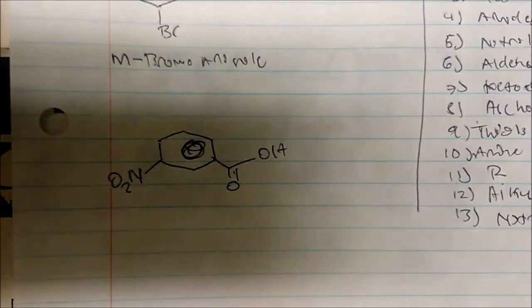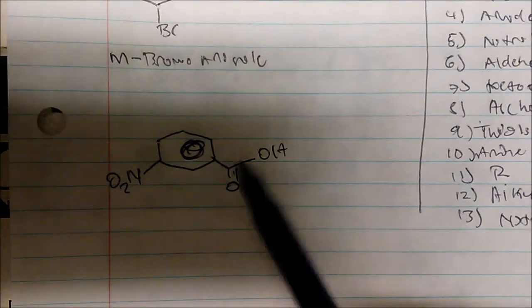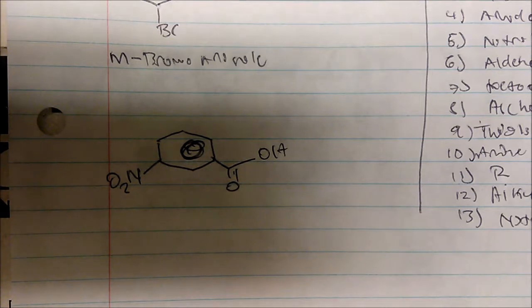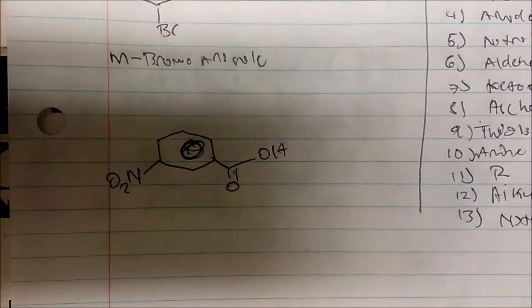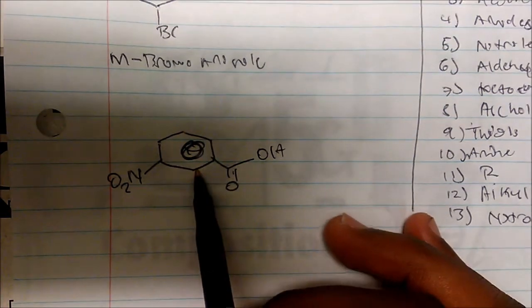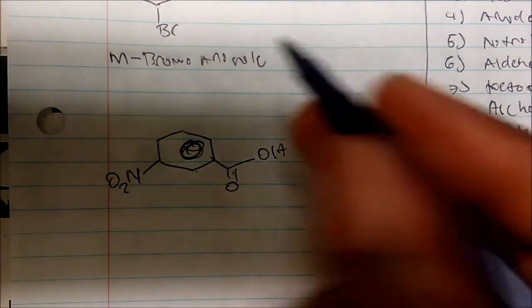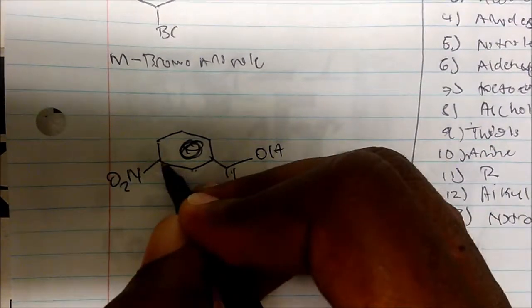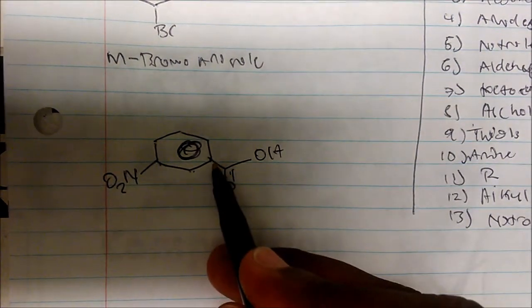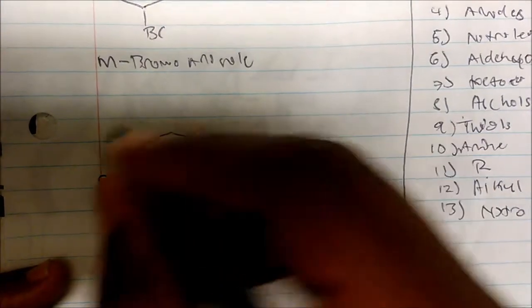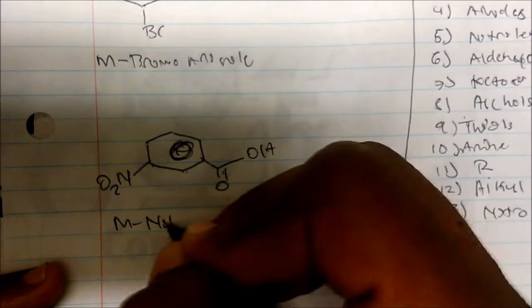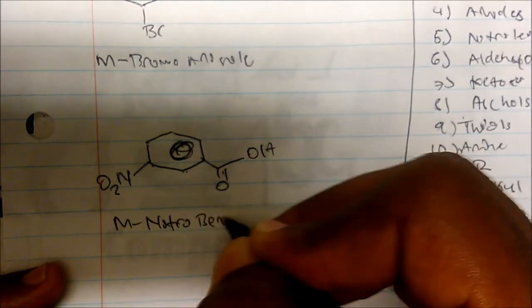What would we name a compound with a nitro group and a carboxylic acid on the ring? Carboxylic acids have the number one priority, so the parent name is benzoic acid. Counting from the carboxylic acid carbon, the nitro group is three positions away — that's meta — so this is m-nitrobenzoic acid.